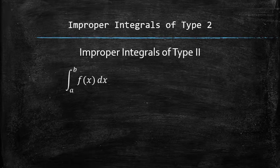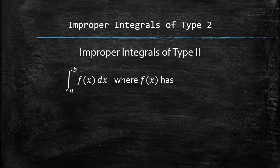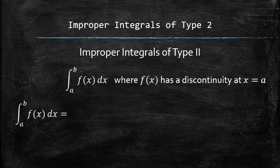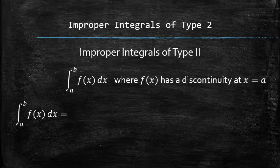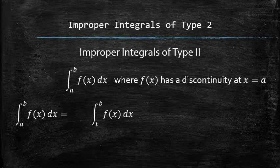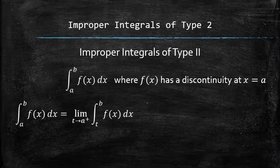Let's consider an integral of a function with the discontinuity at the lower limit. Normally, we would have found the antiderivative and plugged the limits of integration. But since the original function is not defined at a, we can't plug a into the function's antiderivative. Therefore, we replace a with a new variable, let's say t, and set up a limit with t approaching a from the right.